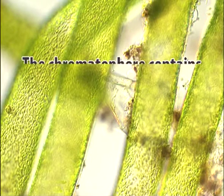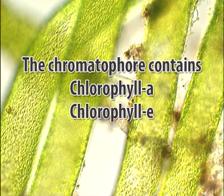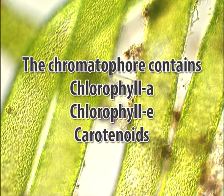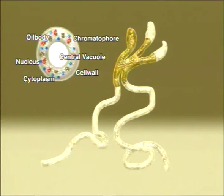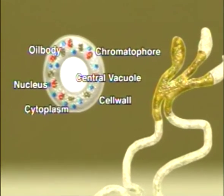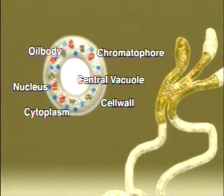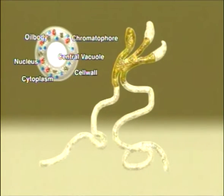The chromatophore contains chlorophyll A, chlorophyll E, and xanthins. It lacks chlorophyll B. Pyrenoids are almost absent. The reserve food is oil or fat, stored within the cytoplasm in the form of countless droplets.